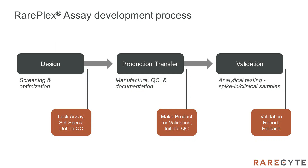Once we have decided to proceed with an assay, our development process is broken into three major phases: design, production transfer, and validation. Design is synonymous with assay optimization. During this phase, we establish our surrogate sample controls, screen antibody clones, select the best fixation and antigen retrieval conditions, and titrate reagents, culminating in a locked assay that allows us to define quality control metrics for manufacturing and to set specifications for our subsequent validation.